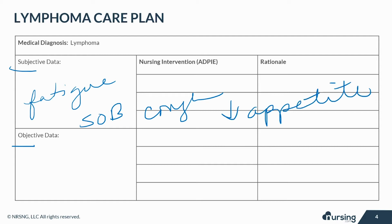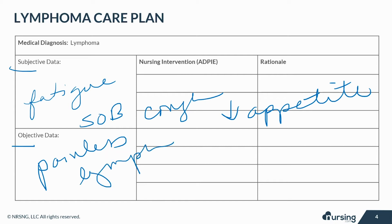Objective or measurable data includes swollen, painless lymph glands or nodes, fever without infection, and weight loss. Keep in mind with lymphoma, symptoms are not always going to be present.